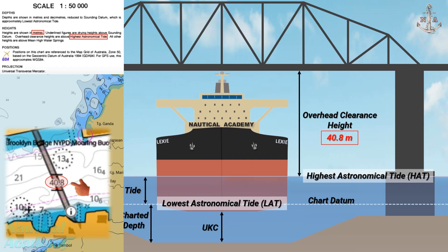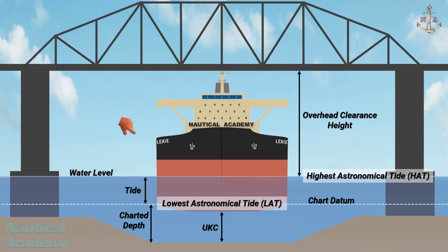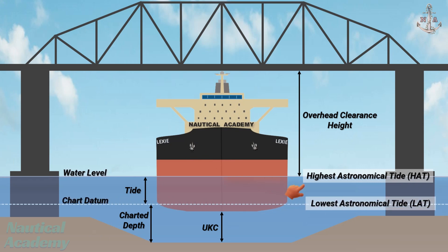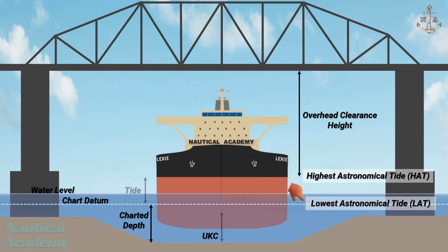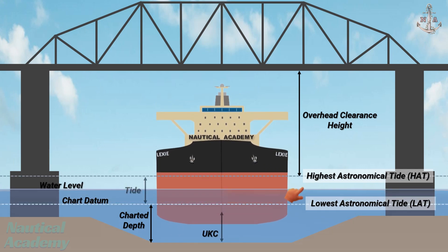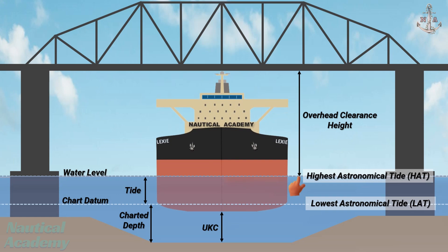Both traditional paper charts and modern electronic navigational charts provide this vertical clearance information. In simple terms, the chart gives mariners two critical worst-case values: the minimum depth based on the Lowest Astronomical Tide, and overhead clearance based on the Highest Astronomical Tide.